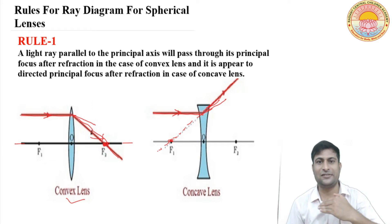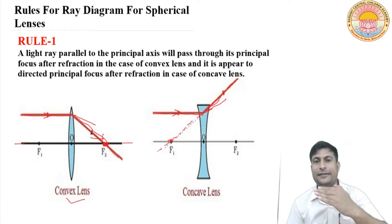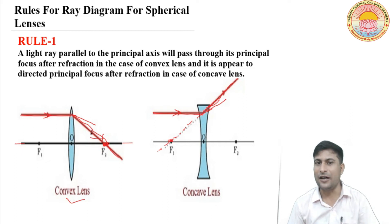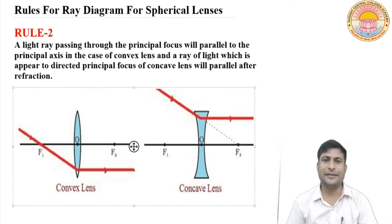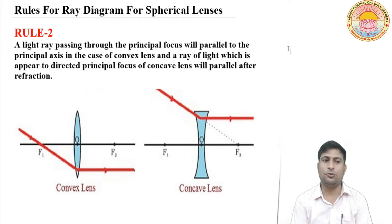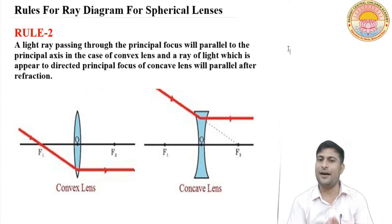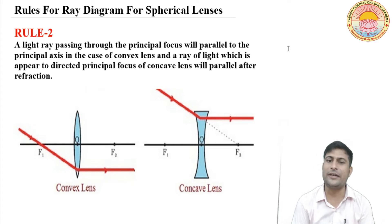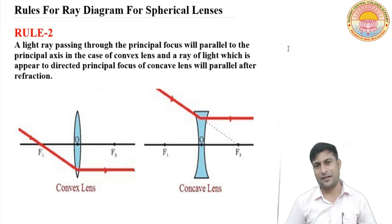When another parallel ray hits the lens, after refraction it will pass through the principal focus of the convex lens and be directed towards the principal focus of the concave lens. Now the second rule: a light ray passing through the principal focus will become parallel to the principal axis in the case of convex lens, and a ray of light which appears directed toward the principal focus of concave lens will also become parallel after refraction.